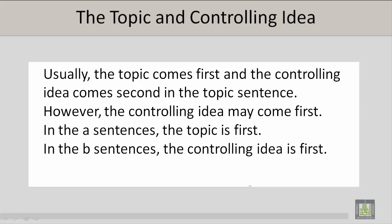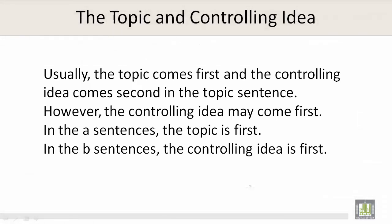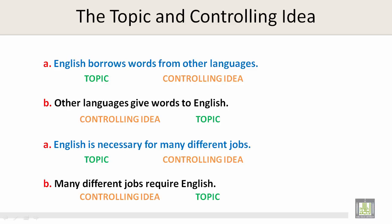In the A sentences, the topic is first. In the B sentences, the controlling idea is first. Now let's take a look at the topic and controlling idea in each of these sections — A, B, A, and B — where you will find the topic and controlling idea.